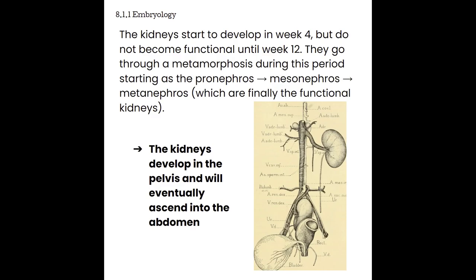Section 8.1: Global Anatomy. We'll start with embryology, location, and anatomical relationship of the kidneys and bladder. The kidneys start to develop at about week 4, but they don't really become functional until about week 12, and they go through a metamorphosis during this period — starting with the pronephros, moving to the mesonephros stage, and then finally the metanephros, which are the final functional kidneys. The important part about the embryology is to know that the kidneys develop in the pelvis and then eventually ascend into the abdomen.